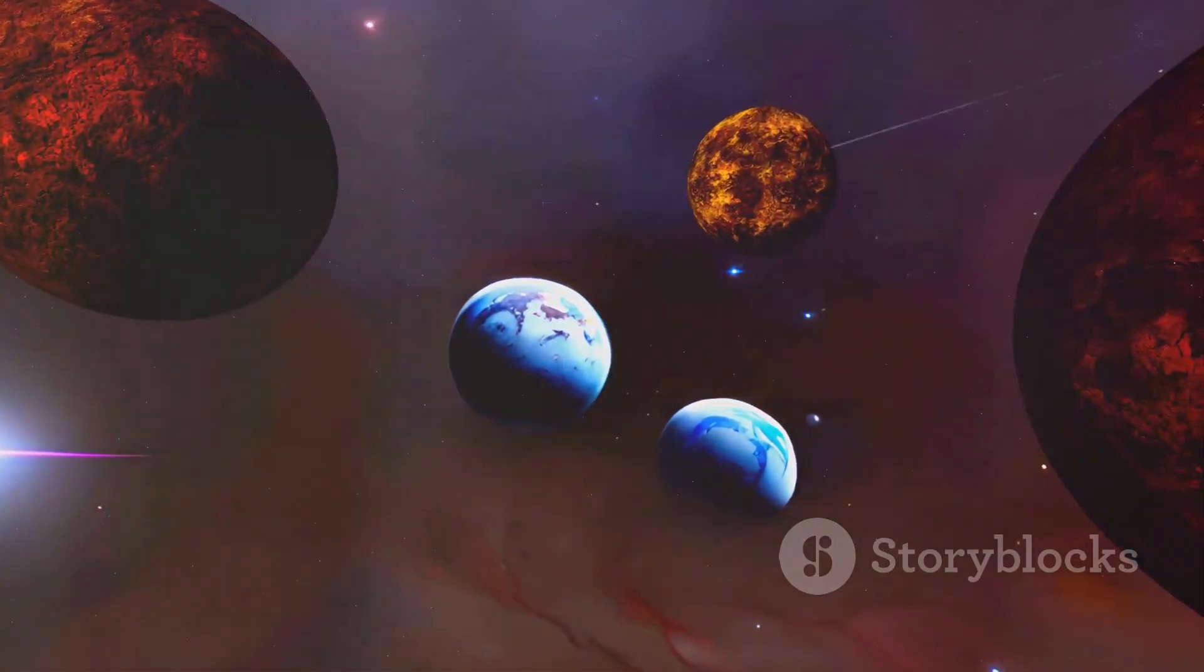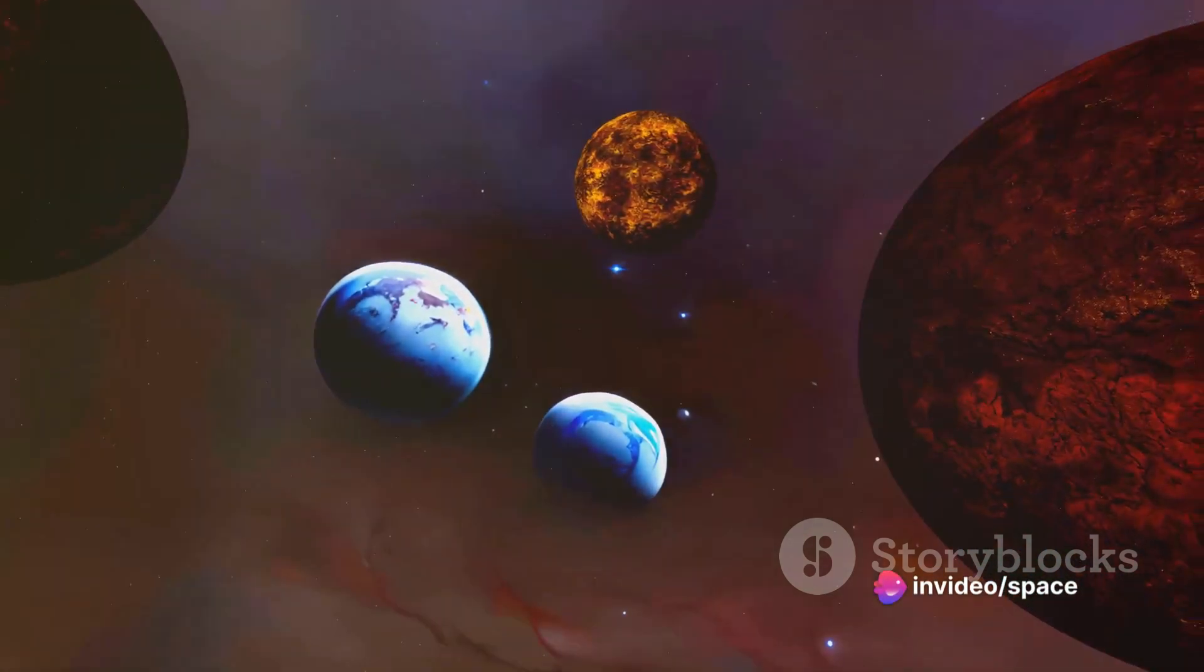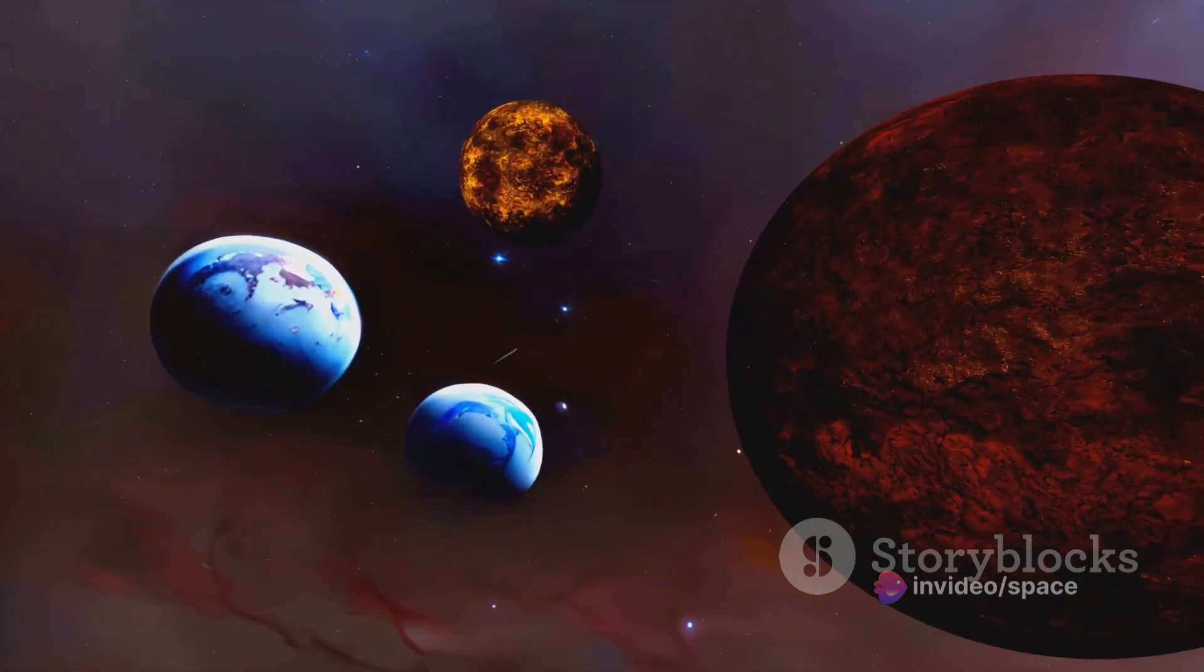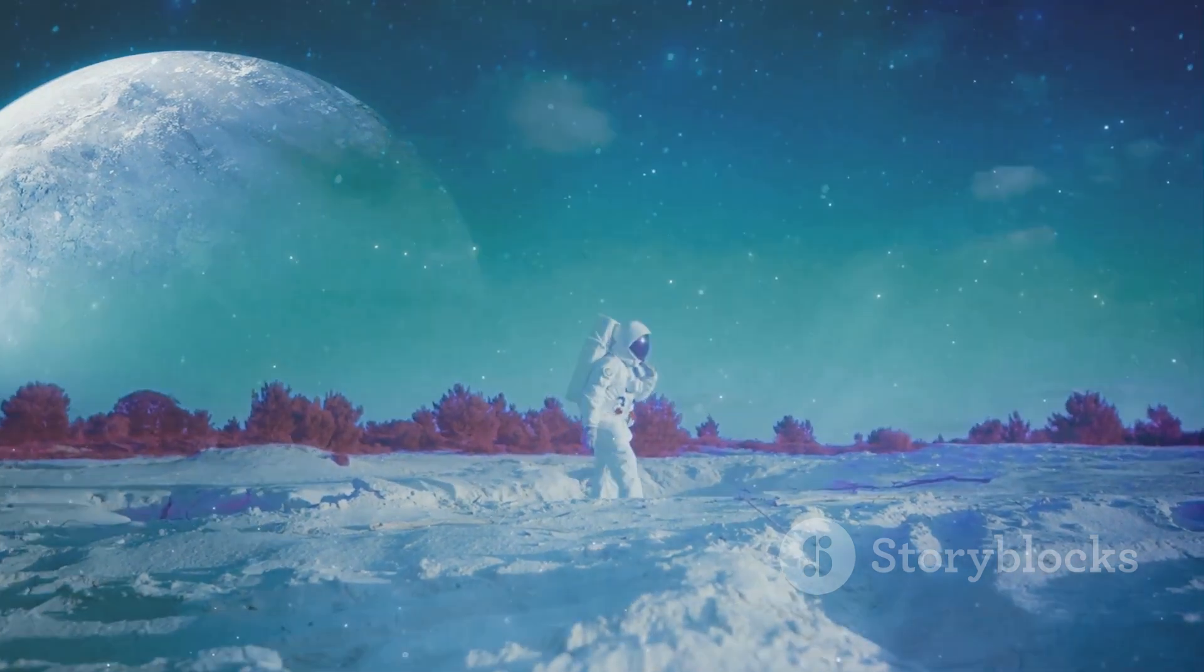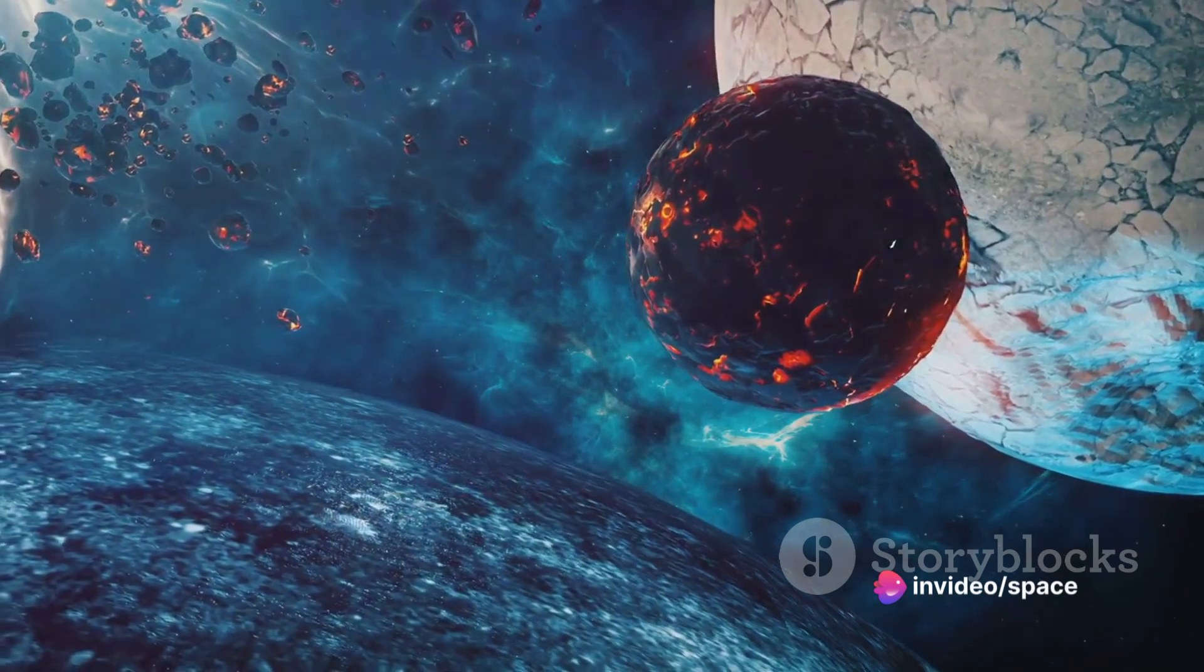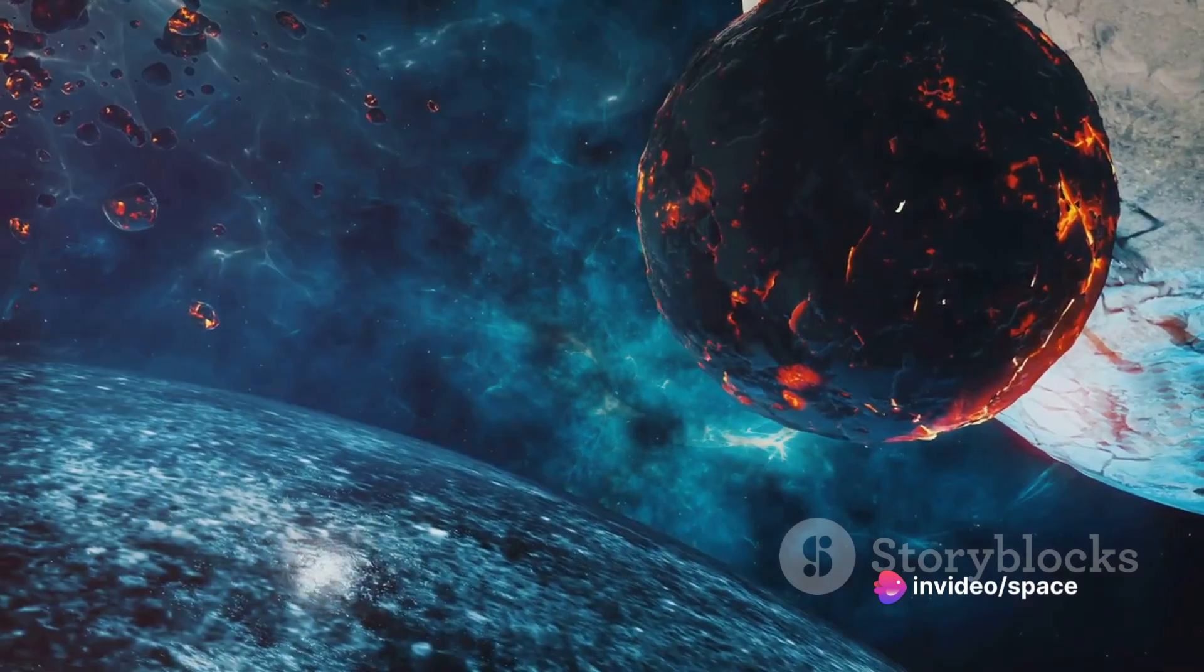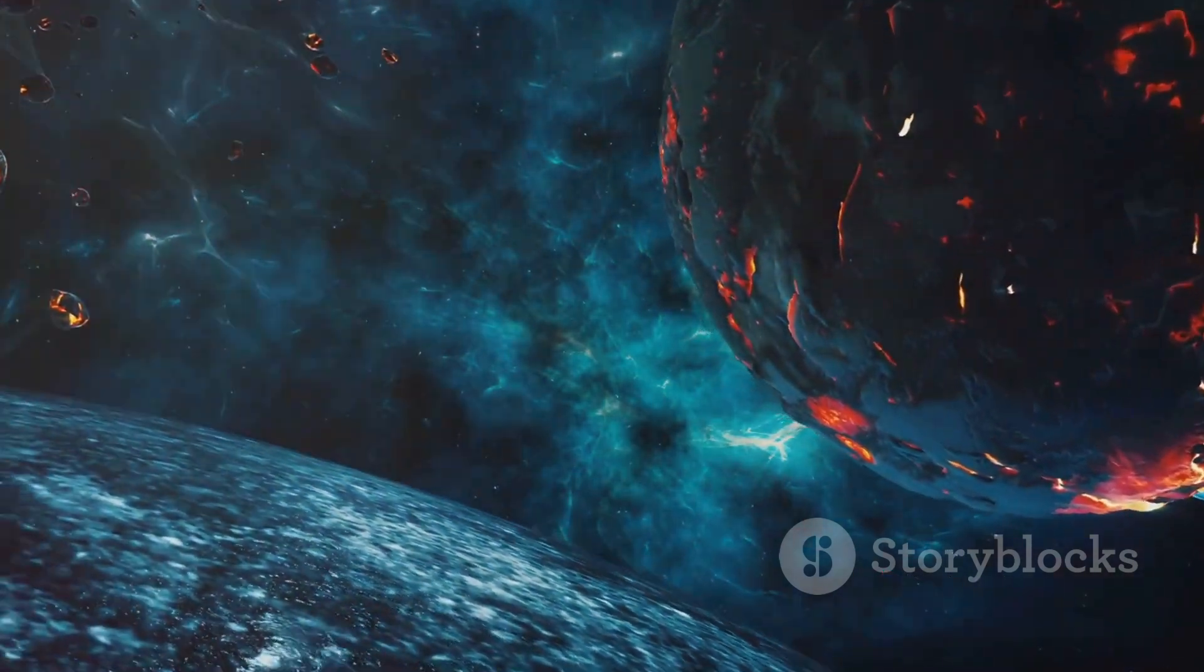In fact, one of the latest studies suggests that Kepler-22b could be an ocean world, with a thick water vapor atmosphere. If confirmed, this would be a groundbreaking discovery, opening up new avenues for our understanding of life beyond Earth. Even a decade after its discovery, Kepler-22b continues to captivate and puzzle scientists. This mysterious planet, so far away from us, yet so potentially similar, keeps us looking up at the stars, hoping to one day unravel its secrets.